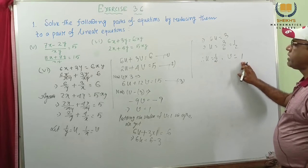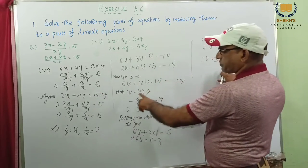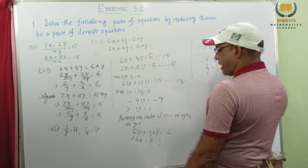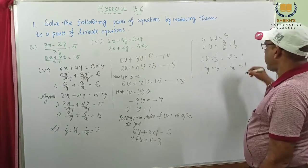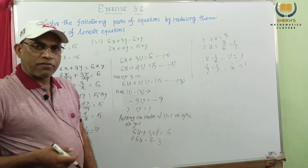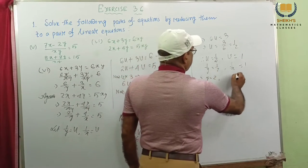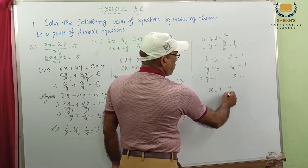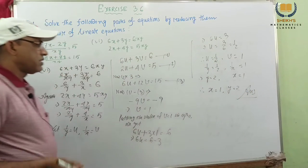But actually, u and v are not given in our problem. U means what is u? U means 1 by y. This is 1 by y. And v means 1 by x, 1 by x. Because the problem is given in terms of x and y. So for our convenience we considered u and v. Next we put back the values of u and v. So taking reciprocal: we get y equal to 2, and taking reciprocal, x equal to 1. Therefore x equal to 1, y equal to 2. This is our answer. Very easy.